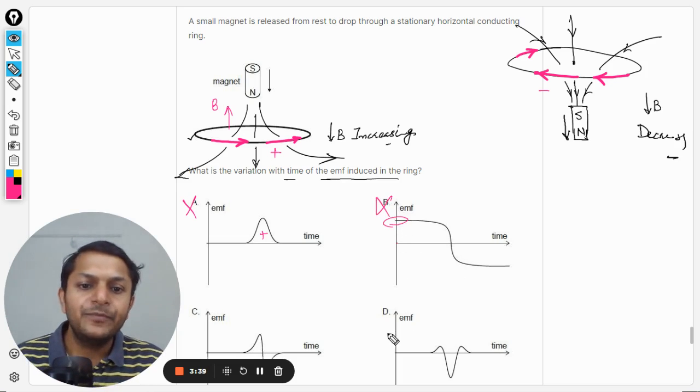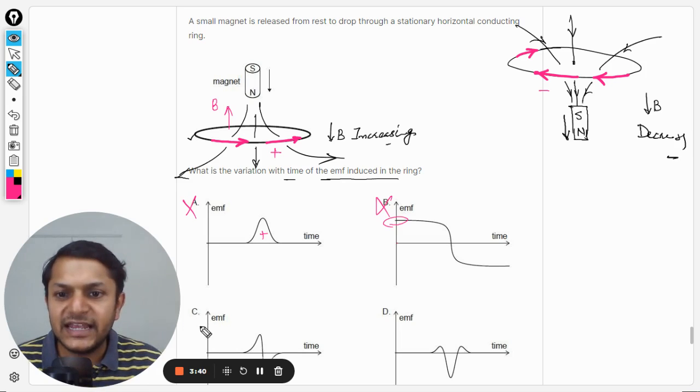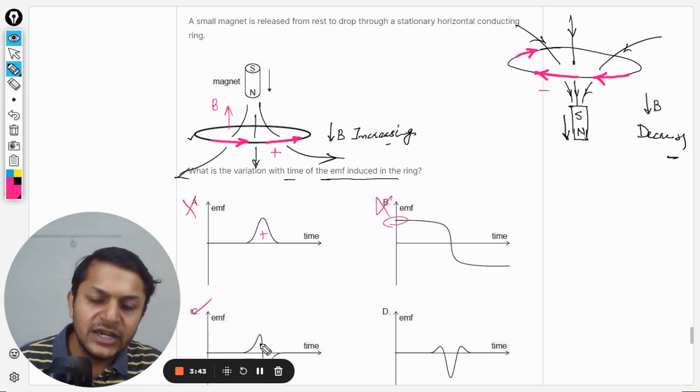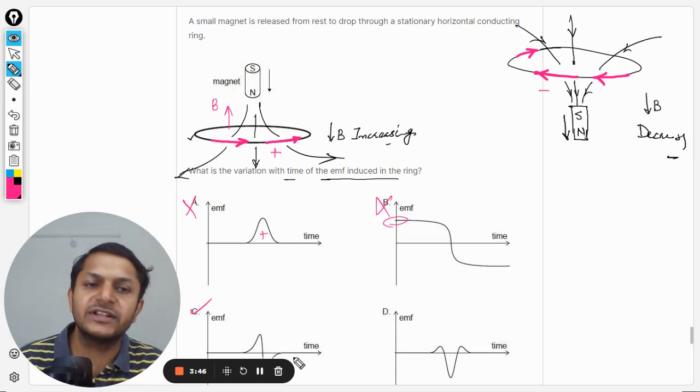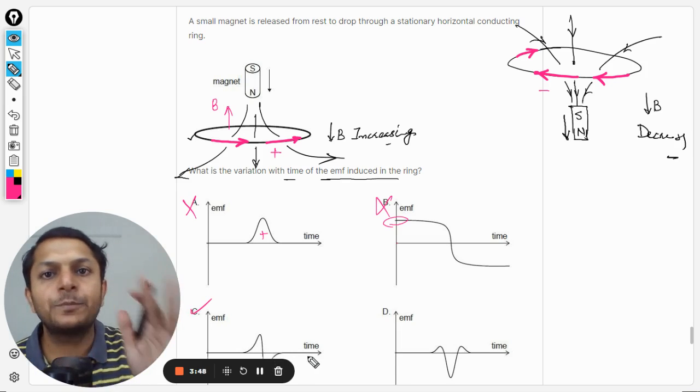D does not make any sense, but C is making sense. I'm going to show you this option properly. You see, one part of this is positive, another is negative, so definitely C option is correct.